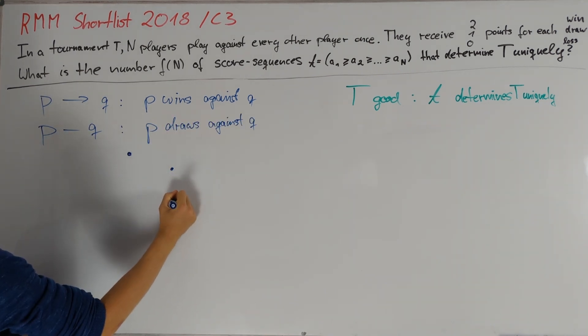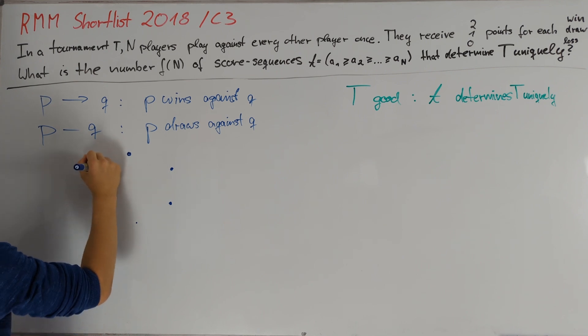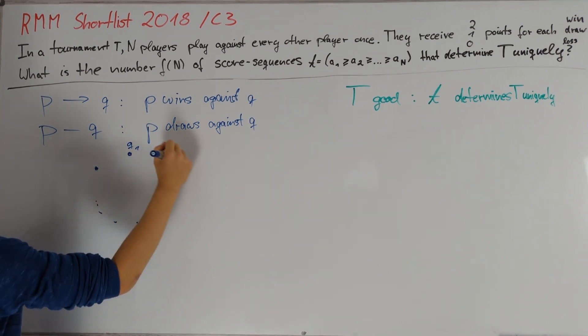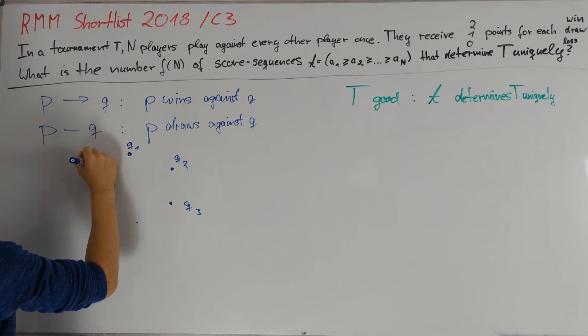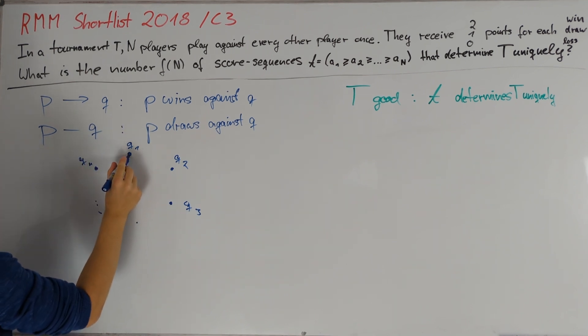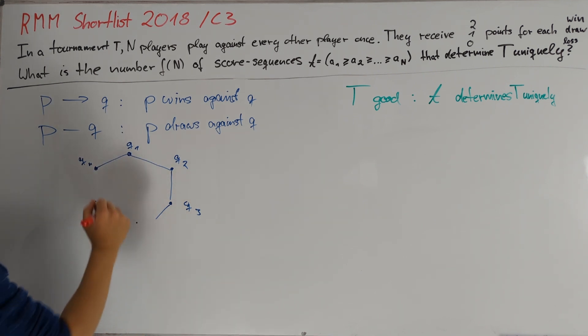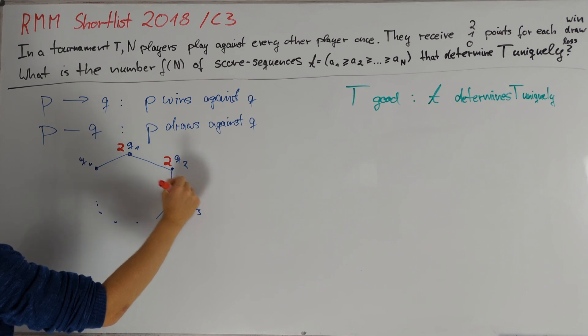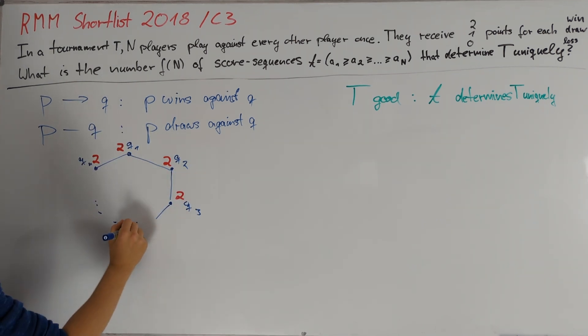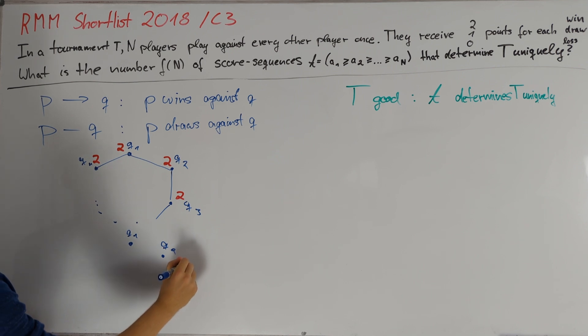Let me write down what I just said. So we consider some players. Let's call them Q1, Q2 up to Q little n, and we assume that Qi always draws against Qi+1. Then within the sub tournament all players receive exactly two points.